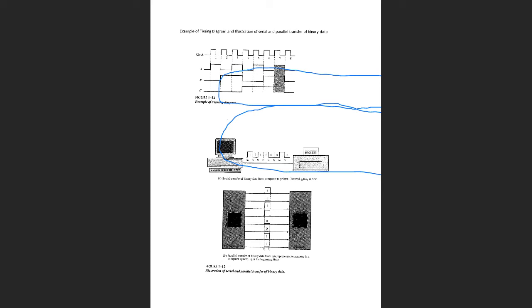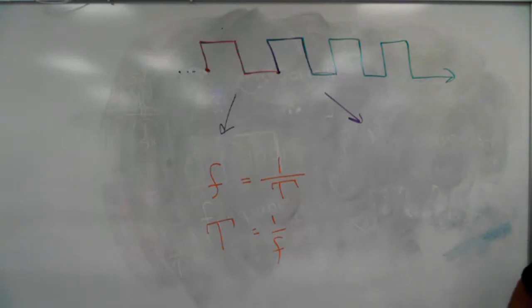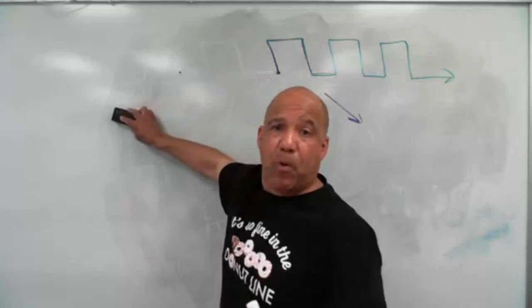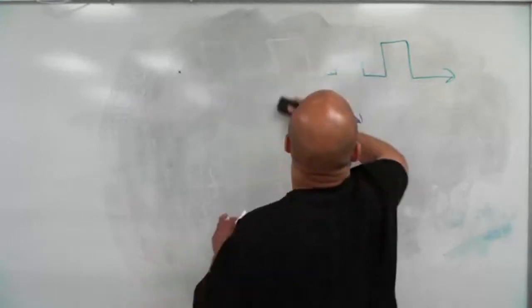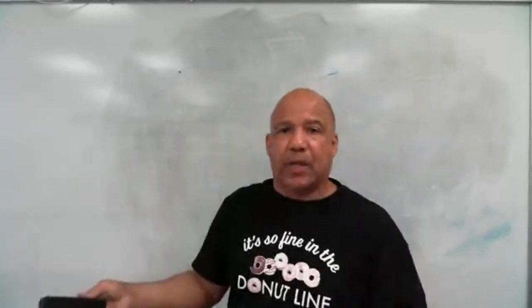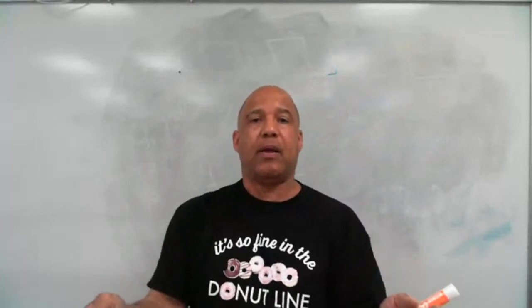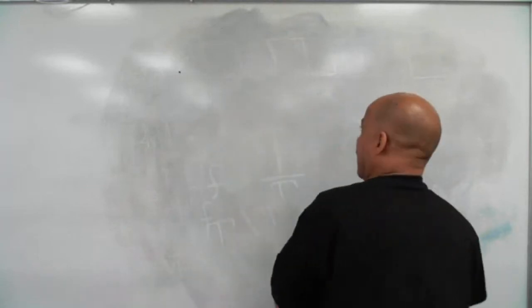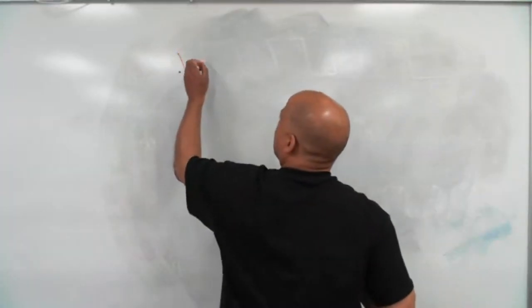This diagram shows an example of parallel data transfer. When your computer talks to memory internally, data must move very quickly, so parallel data transfer is used. When communicating with a printer in the old days, a serial line was used — sending data bit by bit — because it doesn't need to be fast, and it's less expensive.